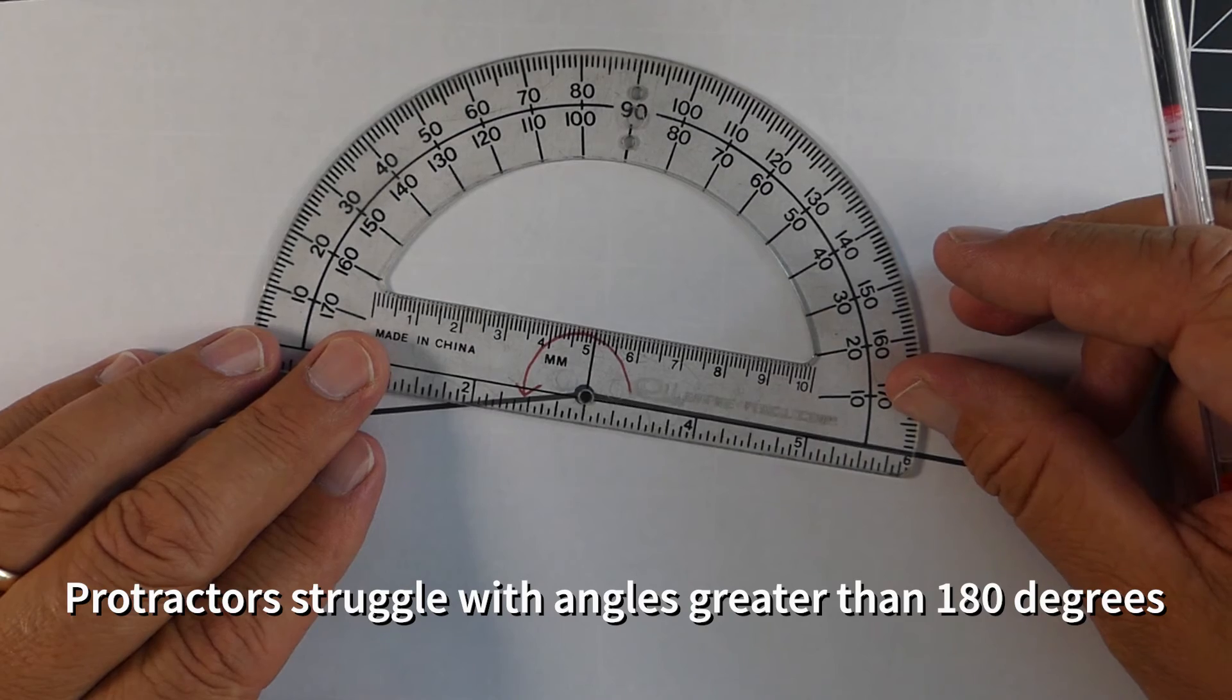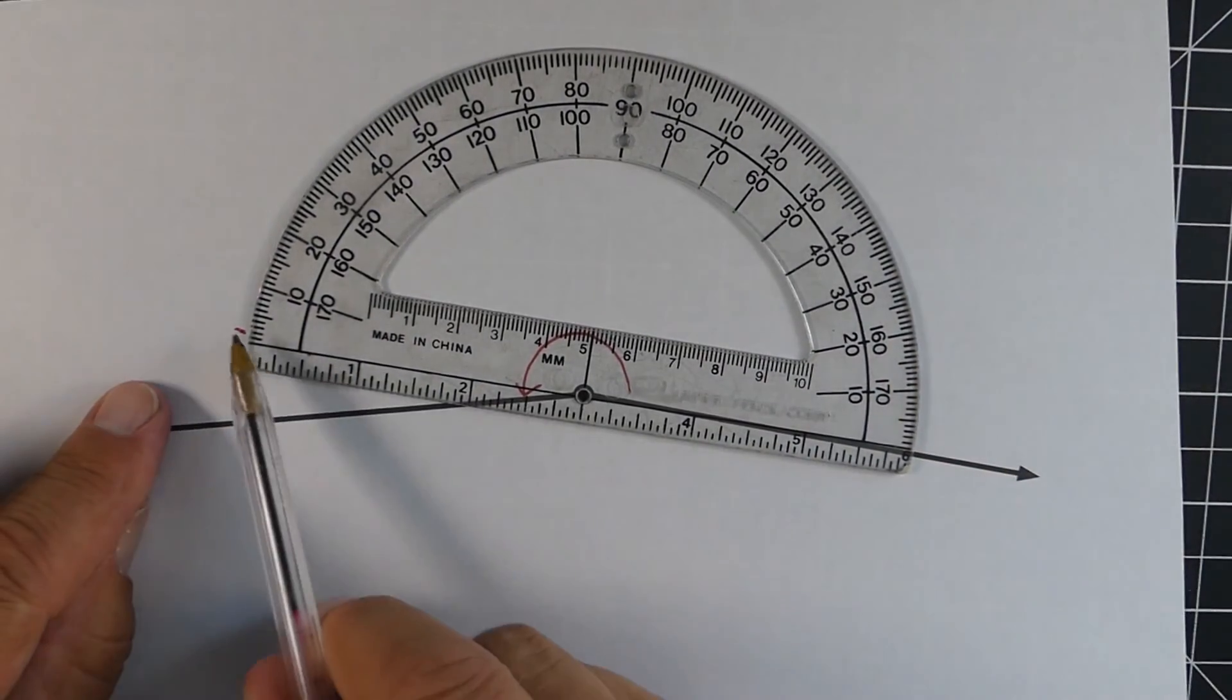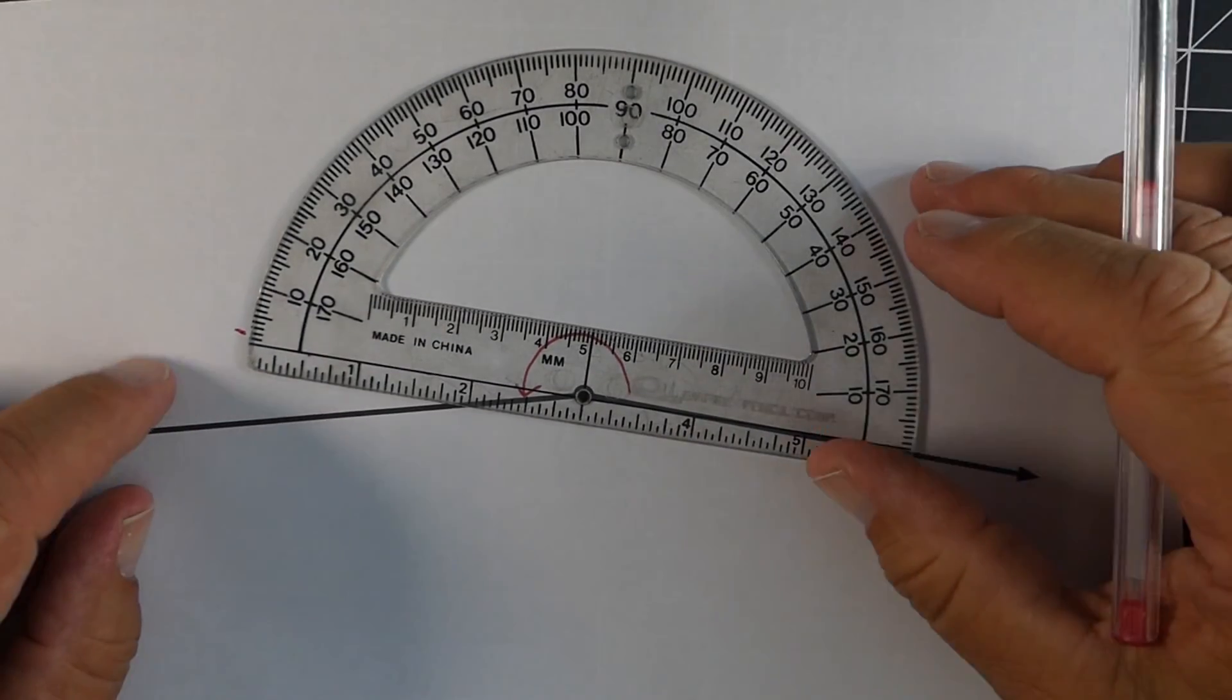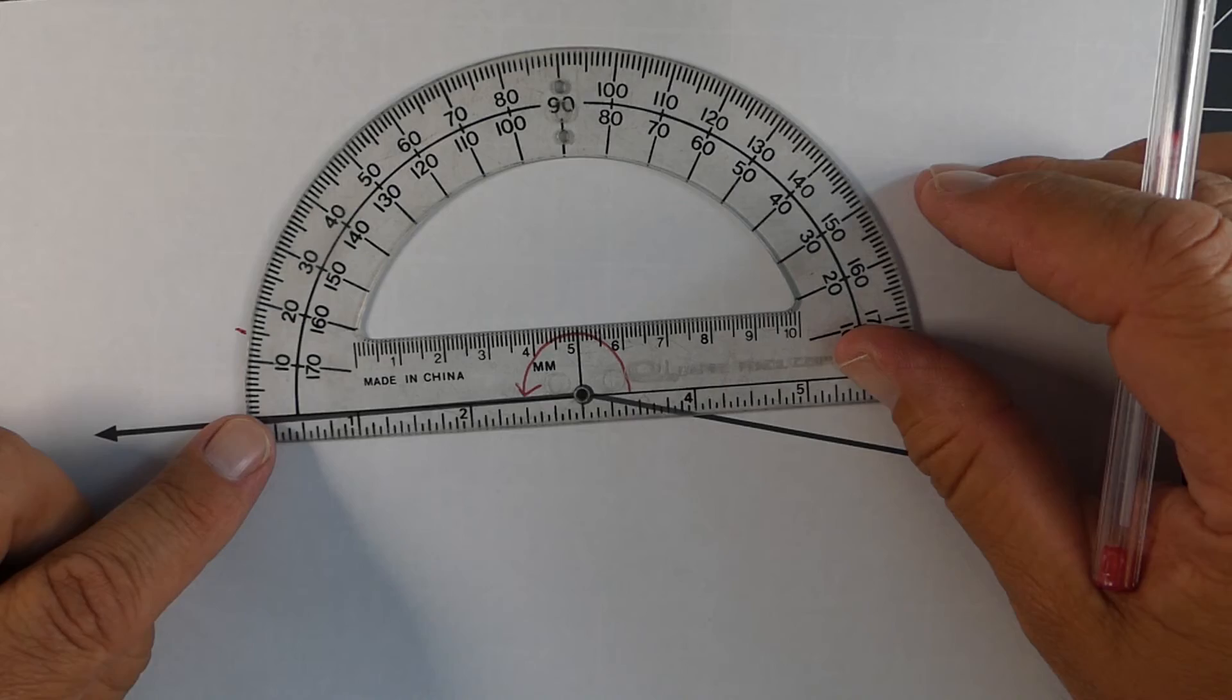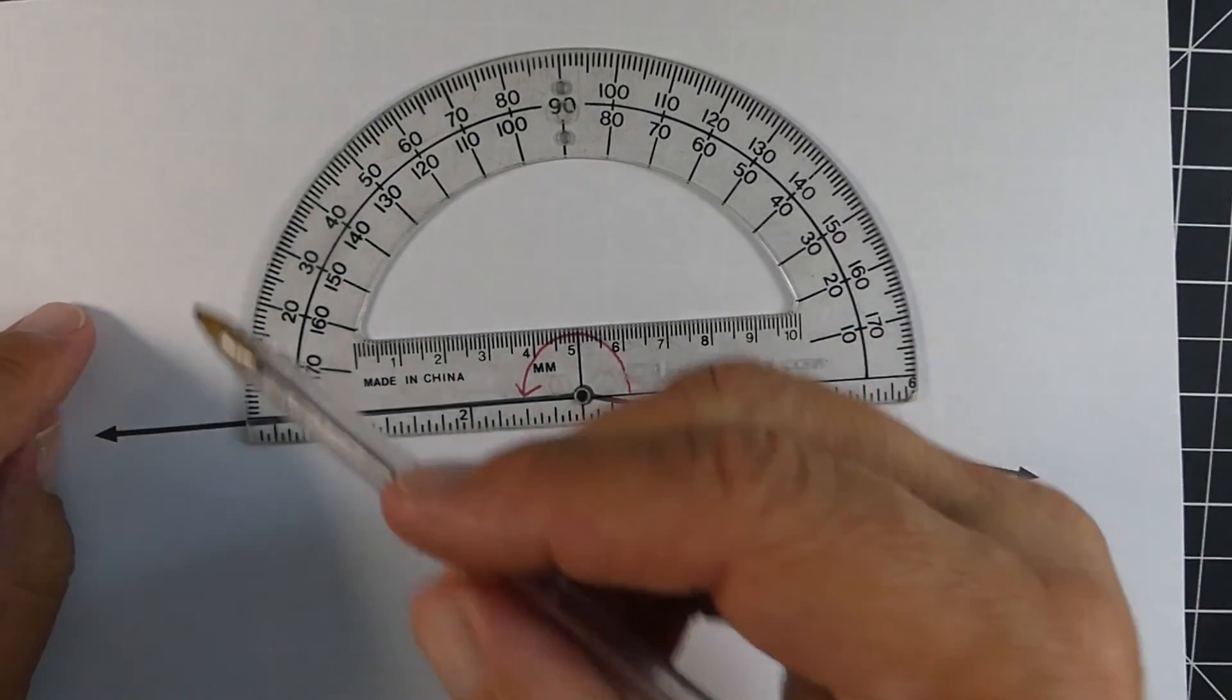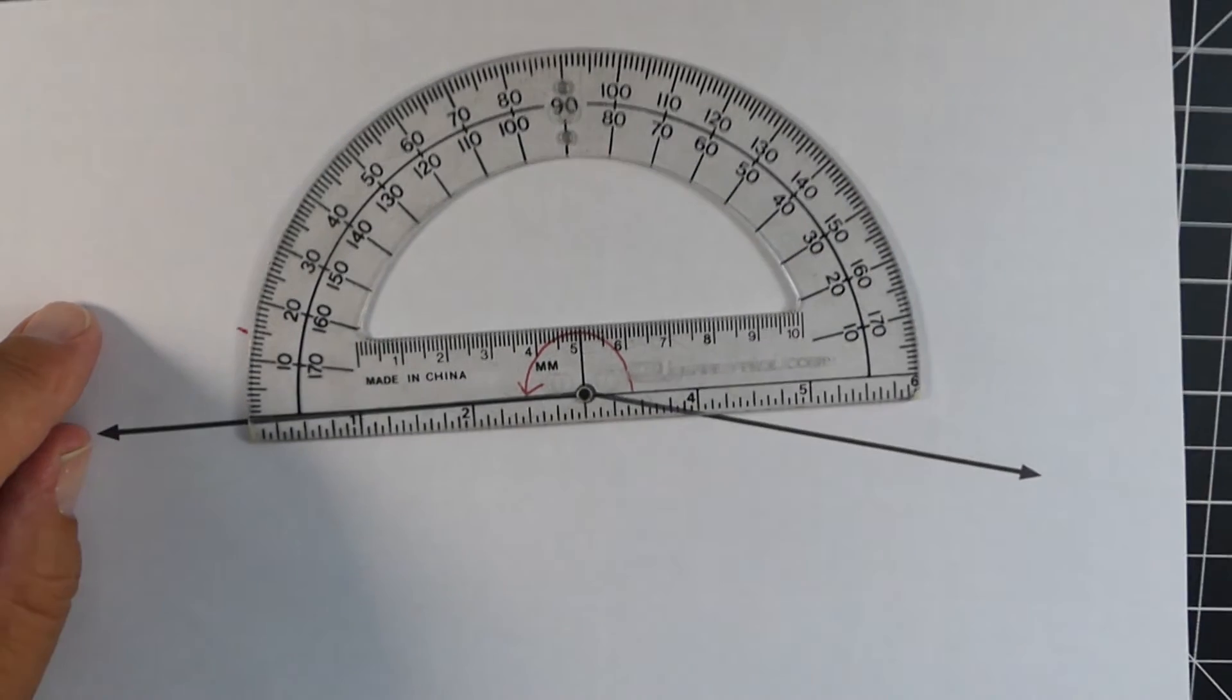But if you're dealing with a protractor, it only goes up to 180. So you'd have to make a little mark where the 180 degrees is, you would have to then rotate the protractor, measure that distance, in this case looks like 15, and add that number to the 180. So it's just a little extra work makes a little harder.